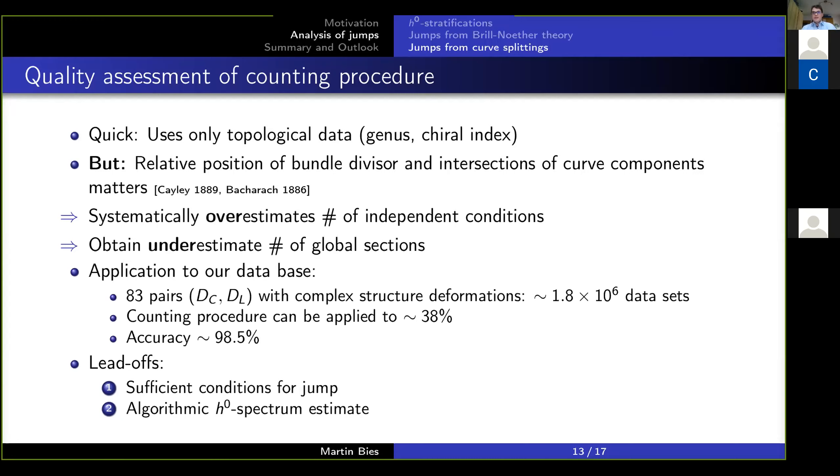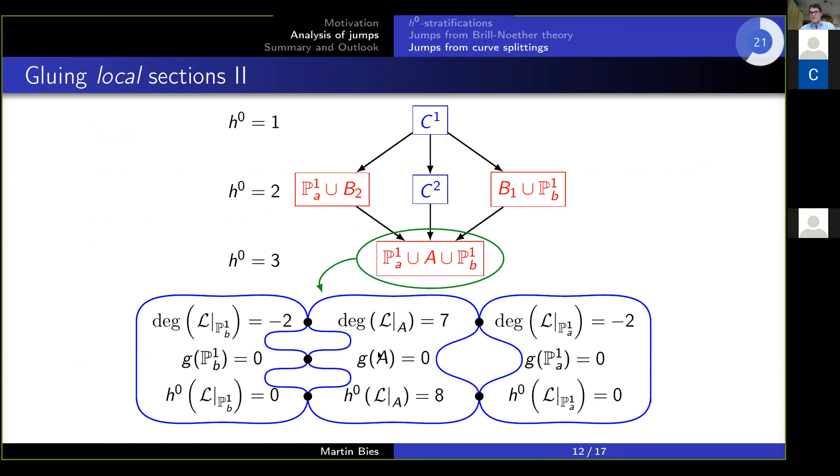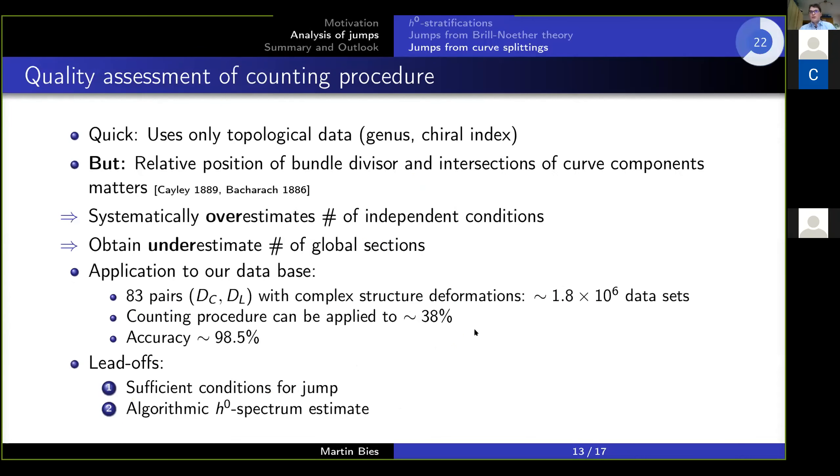Which consists of 83 pairs of curves and line bundles, including all the complex structure deformations for the curves. This amounts to about 1.8 million data sets. Then you see that I'm actually demanding that I can, on all the curve components, determine the number of sections just from topological considerations, which is a very restrictive demand.